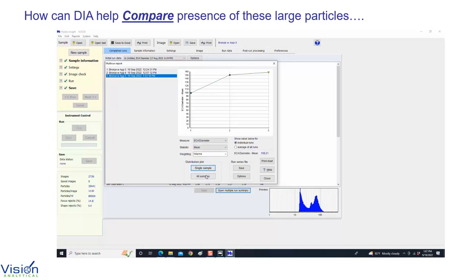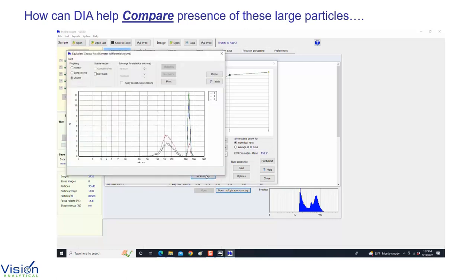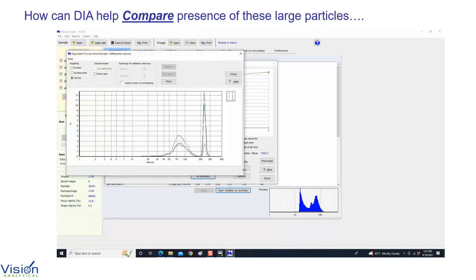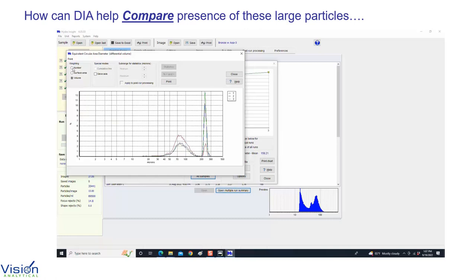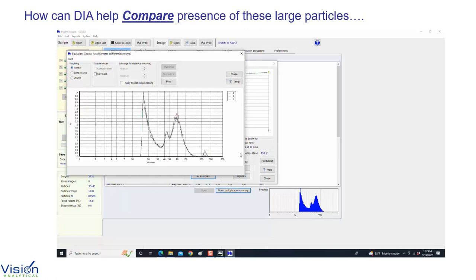So, what we do is we try to overlay these samples and compare size and shape measures and the presence of these large particles. In this video, we show the overlaying of three sequential analysis and how the presence of these larger particles are increasing over time. This can be a good quality control tool to capture problems early and reduce downtime.